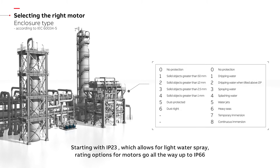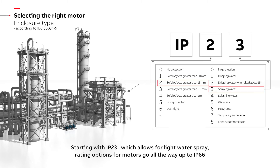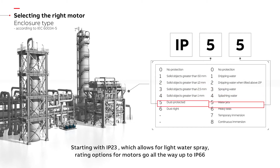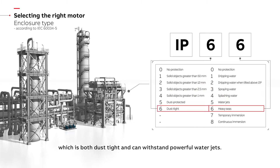Starting with IP23, which allows for light water spray, rating options for motors go all the way up to IP66, which is both dust tight and can withstand powerful water jets.